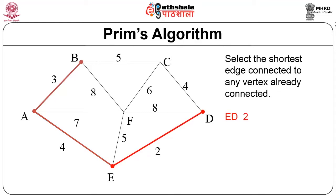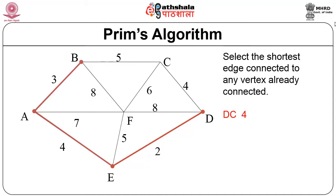Now you have A, B, E, and D selected. You have to select the edge connected to any already-connected vertex. To B you have 5 and 8; to A you have 7; to E you have only 5 (the other edge already considered); to D you have 4, 6, and 8. Obviously, you will select C-D with weight 4. Now from C you have 6 connecting F; from E you have 5; from D you have 8; from A you have 7; from B you have 8. So you select E with weight 5, because that is the shortest.